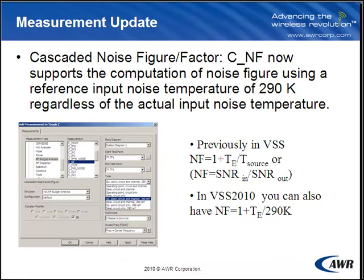Cascaded noise figure now supports the computation of noise figure using a reference input noise temperature of 290 degrees Kelvin, regardless of the actual input noise temperature. This is the IEEE definition of noise figure calculation. TE is the equivalent input noise temperature. T-source is the temperature at the input of whatever you're measuring cascaded noise figure over. You might want to use 290 degrees Kelvin as a reference if you're measuring cascaded noise figures starting from after a pre-amplifier, where the noise at the output of the amplifier is greater than 290 degrees Kelvin.